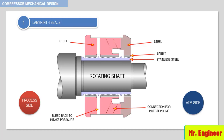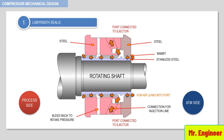The operation can be reversed, and the port can be connected to an ejector. This results in a pressure which is lower than atmospheric. The flexibility of operation of labyrinth seals allows the seal to be used in many gas applications.